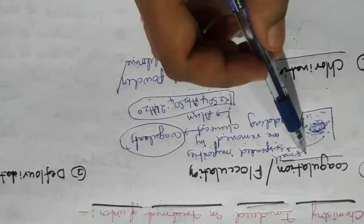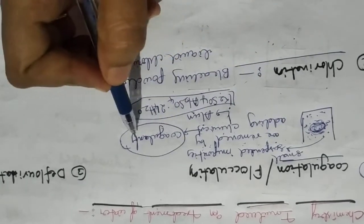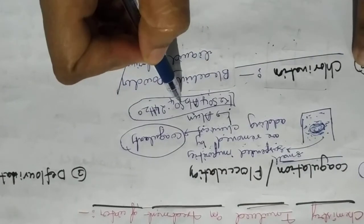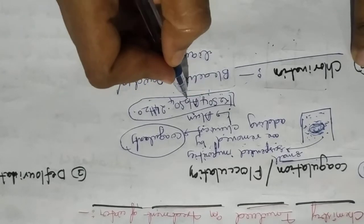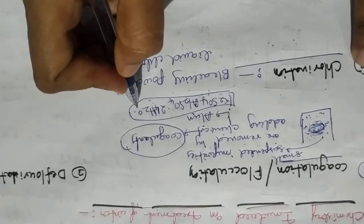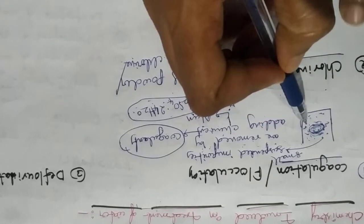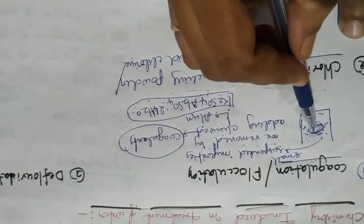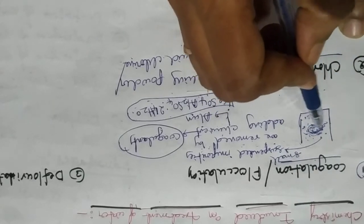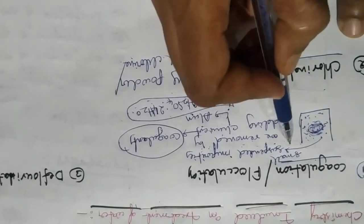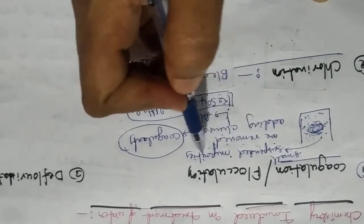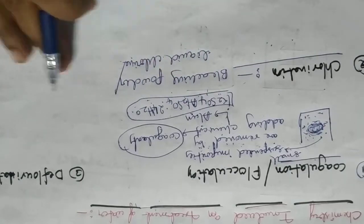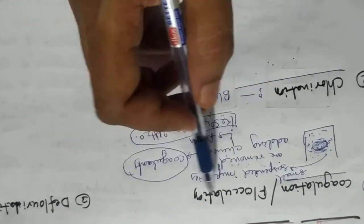In the process of coagulation, we add coagulants. One such coagulant is potassium alum, with the formula K2SO4·Al2(SO4)3·24H2O. When potassium alum is put into water, it forms gelatinous aluminum hydroxide. This gelatinous aluminum hydroxide absorbs the small suspended impurities scattered in the water, thereby removing them. This process is also known as flocculation.